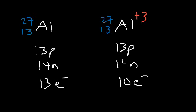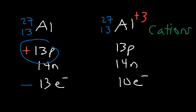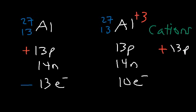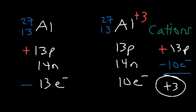Positively charged ions are known as cations; negatively charged ions are known as anions. For the aluminum atom, 13 protons and 13 electrons give a net charge of zero, so atoms are neutral. For the ion, 13 protons plus 10 electrons (which carry a negative charge) gives 13 plus negative 10, equaling a net charge of positive 3.